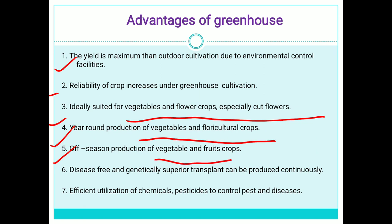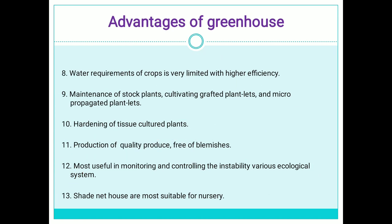By maintaining the required temperature and humidity year-round, crops can be produced at any time. Off-season production of vegetable and fruit crops is possible — for example, watermelon and muskmelon can be grown in any season. Genetically superior transplants can be produced continuously. Efficient utilization of chemicals and pesticides helps in controlling pests and diseases. Water requirement of the crop is very limited with higher water use efficiency compared to open field cultivation.